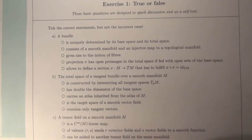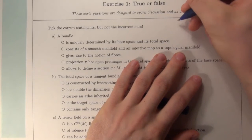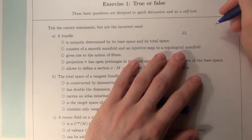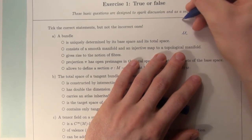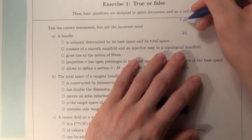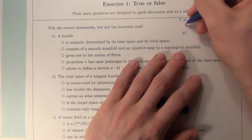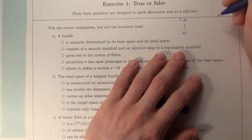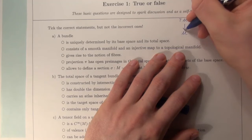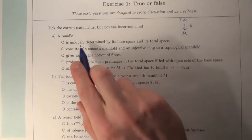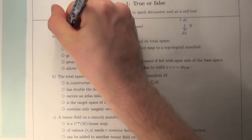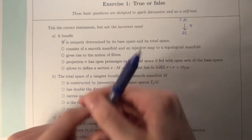Question A: a bundle is uniquely determined by its base space and its total space. Recalling the definition of a bundle, it consists of a base space M, a total space E, and importantly, a projection which maps from TM into M. This projection is not mentioned here, so this statement is wrong.